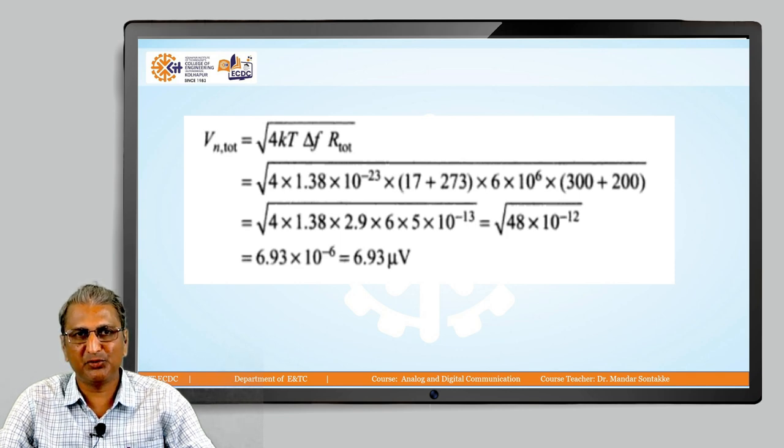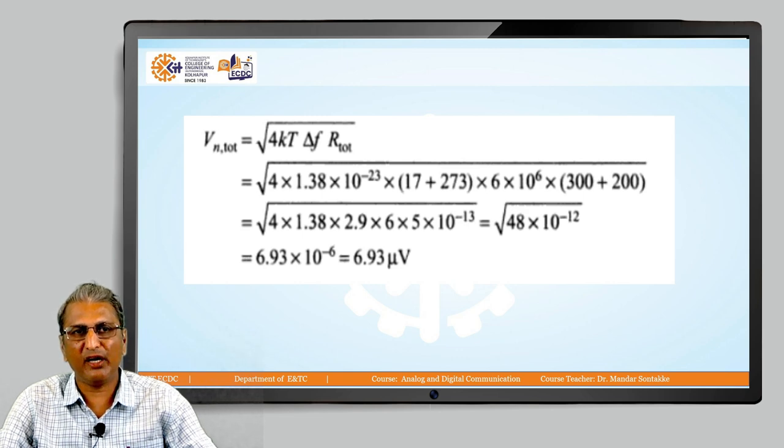Temperature 70 plus 273. Bandwidth 6 × 10^6 times, this is important, it is the addition of both 300 and 200. So the total answer is 6.93 × 10^-6 or 6.93 microvolts.